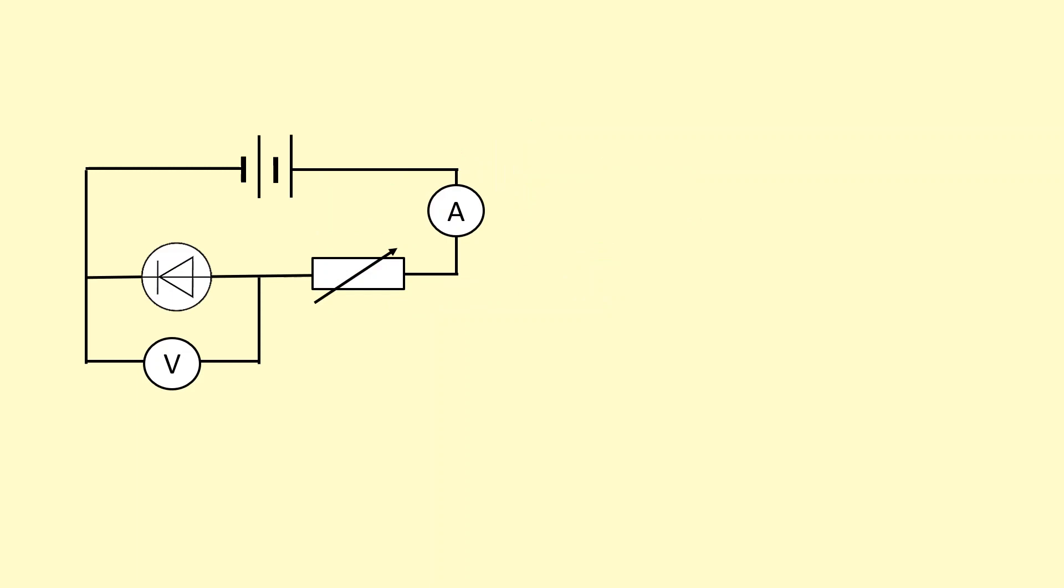I can use this circuit to study the current and potential difference characteristics of the diode. All I have to do is change the resistance here. And if I change the resistance there, it will change the voltage and current through the diode. And that I can plot on a graph.